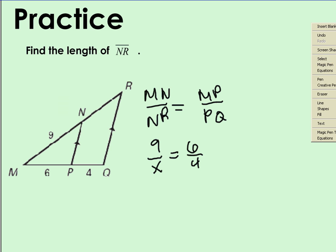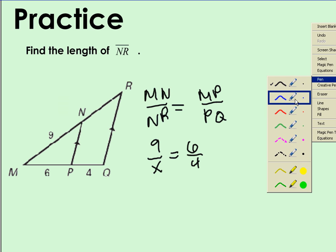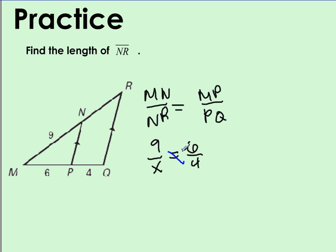From here, we can cross multiply in order to solve. And we will find that we get 6x is equal to 36. And when we divide both sides by 6, we're going to find that x is equal to 6. So this means that the length of NR is equal to 6.